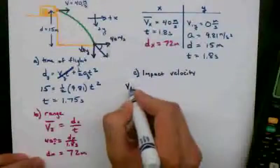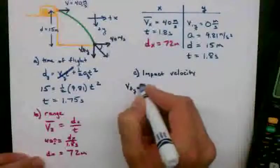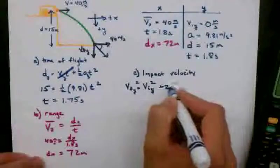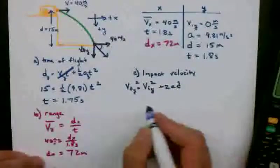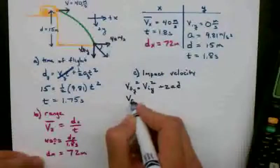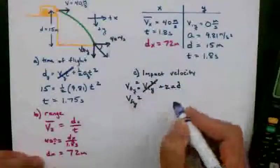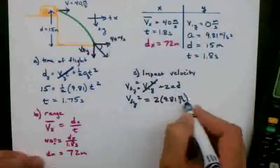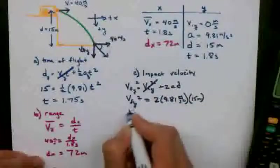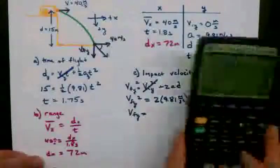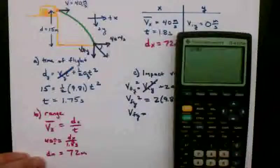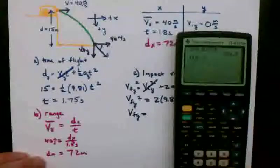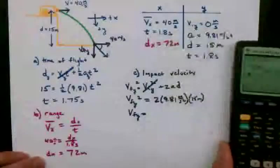First, v final in the y squared equals v initial in the y squared plus 2AD. That's one of the many formulas you can choose to use. So v final in the y squared, v initial is 0, 2, 9.81, 15 meters. And v final in the y turns out to be 17 meters per second.